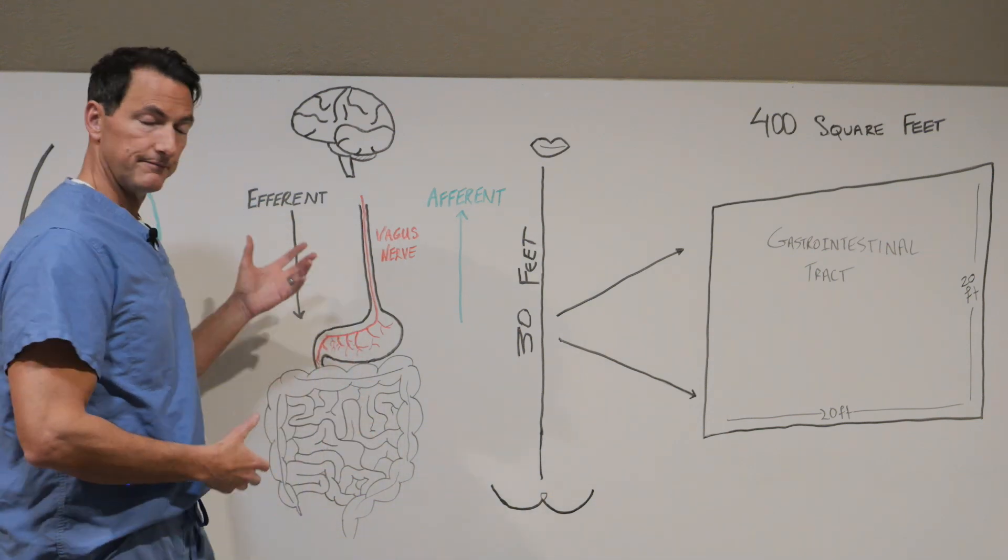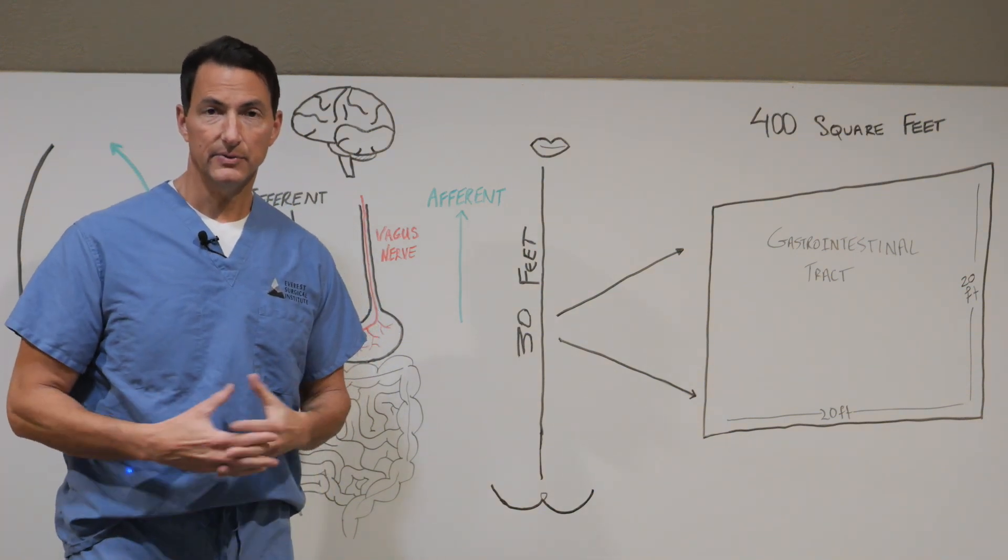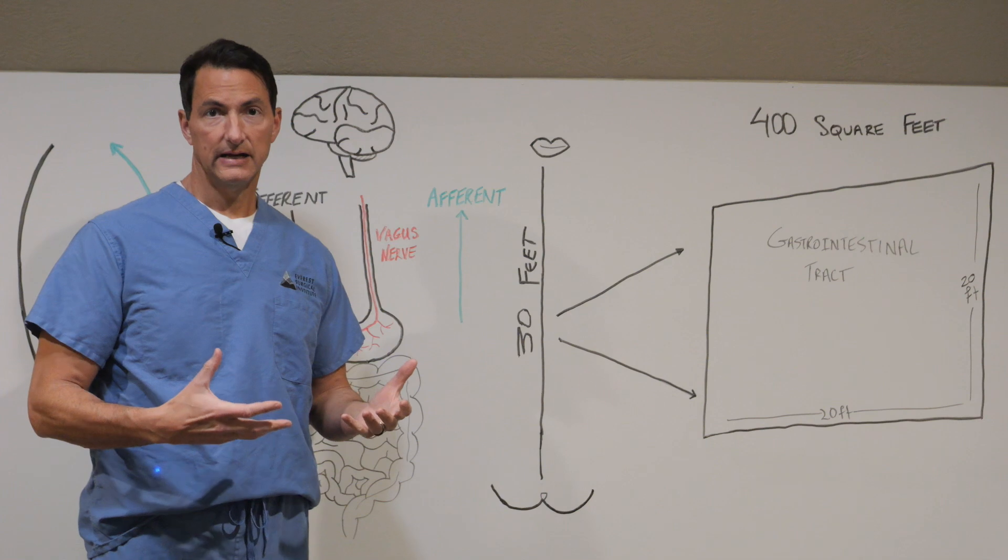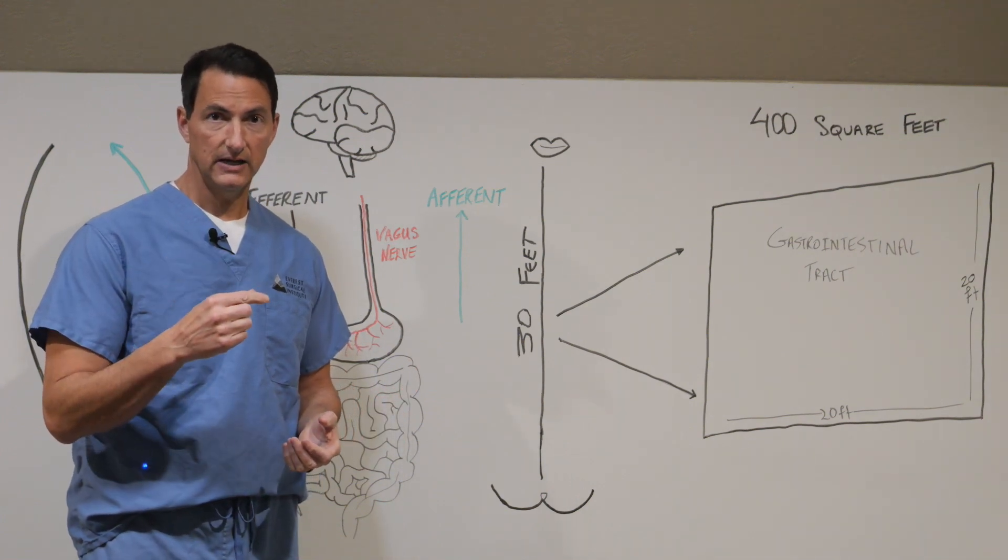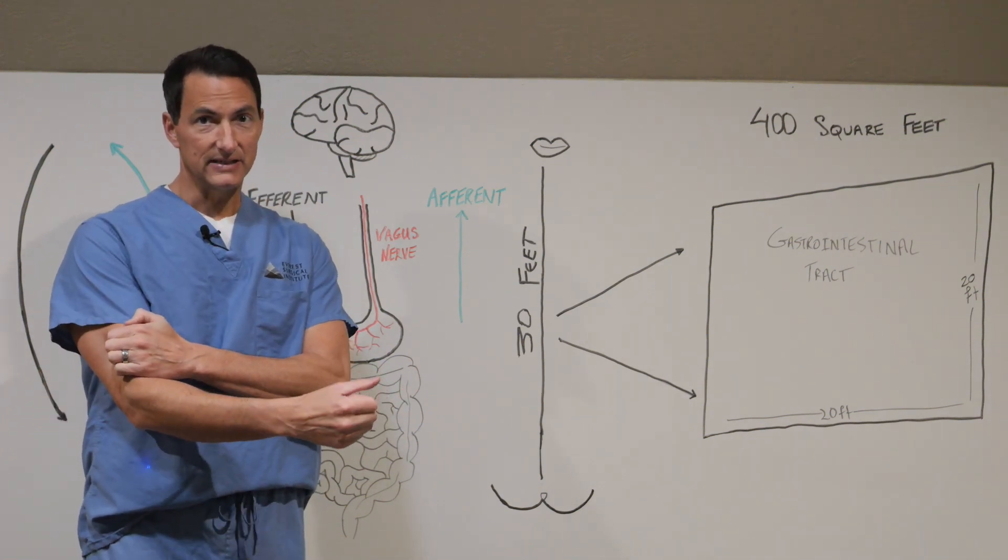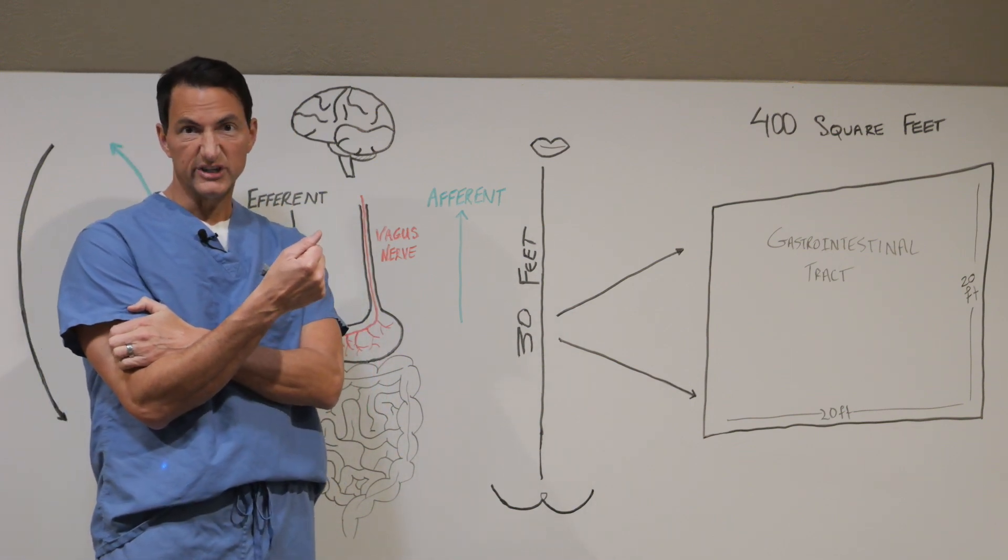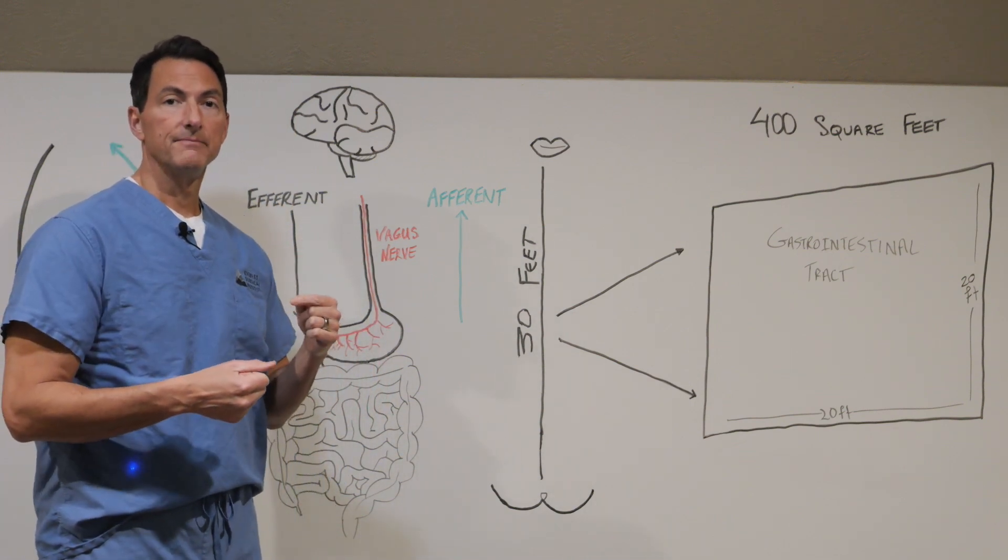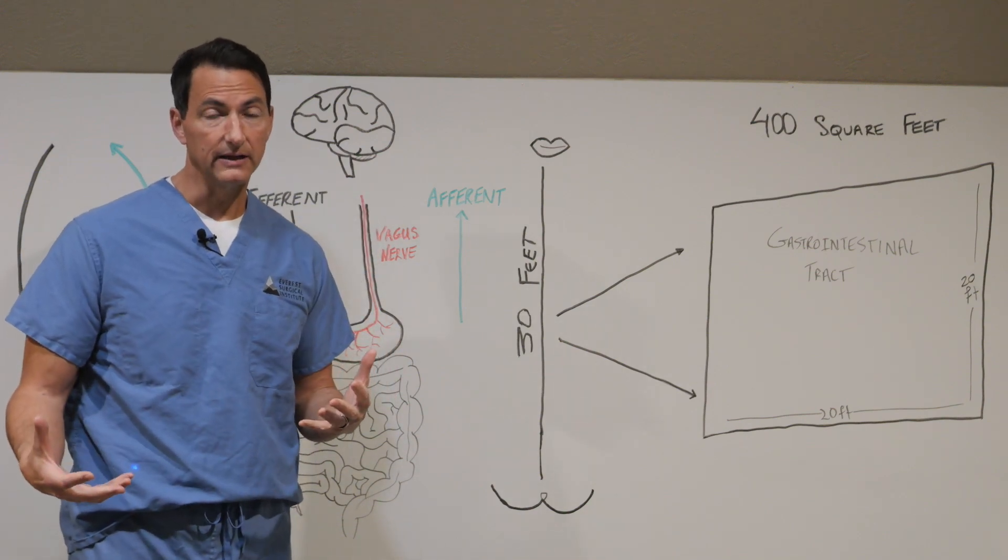So, subcutaneous fat, whether it's in a metabolically healthy person or metabolically unhealthy person, largely, the circuit of communication between those adipocytes and the subcutaneous storage bins, if you will, those circuits are intact. So, those adipocytes are fairly healthy.